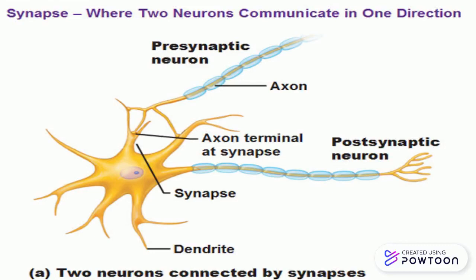Neurons communicate with each other through synapses. The sender of the information is the presynaptic neuron, and the receiver of the information is the postsynaptic neuron. This process is called synaptic transmission.